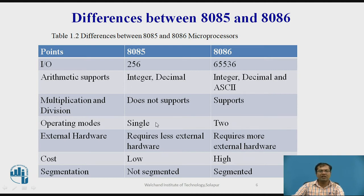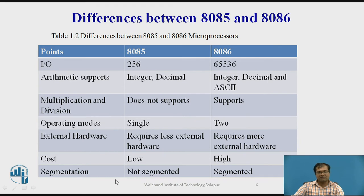Regarding operating modes: the 8085 operates in a single mode, but the 8086 operates in two different modes — minimum mode and maximum mode. Regarding external hardware: the 8085 requires less external hardware, while the 8086 requires more external hardware. Regarding cost: the 8085 is available at low cost, while the 8086 is available at high cost. Regarding segmentation: the 8085 does not support segmentation, but the 8086 does support segmentation with four different segments — code segment, data segment, extra segment, and stack segment.